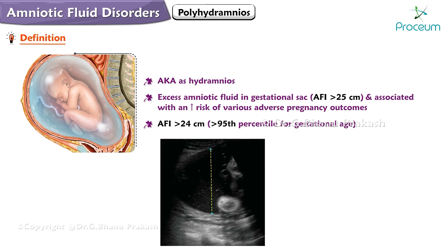This occurs when the amniotic fluid index is more than 24 cm, which is more than the 95th percentile for the gestational age, and the deepest vertical pocket is more than 8 cm.